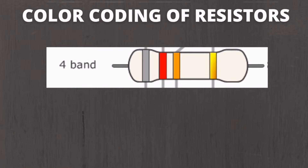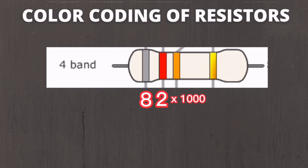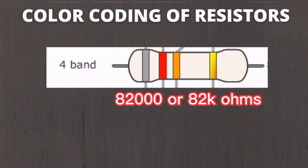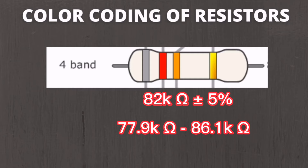Example number two is a four-band resistor. Just like before, the first and second band colors are the first and second significant values, and the third band is the multiplier. Unlike the three-band resistor, the tolerance is not automatically 20% — it depends on the color of the fourth band. The first band is gray, equal to 8; the second band is red, equal to 2; the third band is orange, giving a multiplier of times 1000. So 82 times 1000 equals 82,000 or 82k ohms. The tolerance is plus or minus 5% since the fourth band is gold, giving a resistance of 82k plus or minus 5%, or between 77.9k and 86.1k ohms.